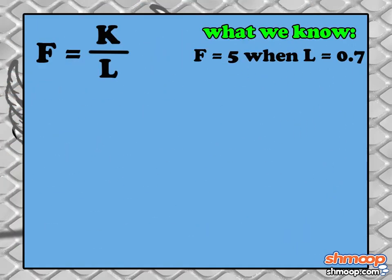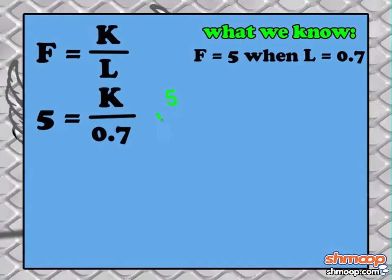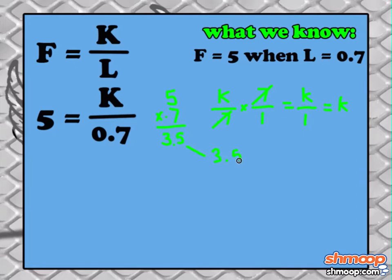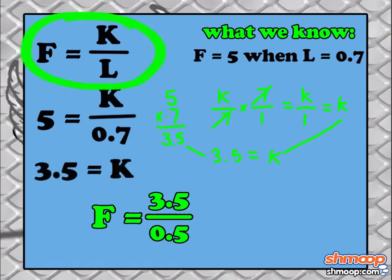To find K, we can plug in what we know. Frequency is equal to 5 in this instance, and our length is 0.7. By multiplying both sides by 0.7, we see that K equals 3.5.